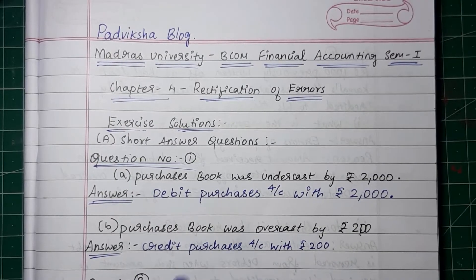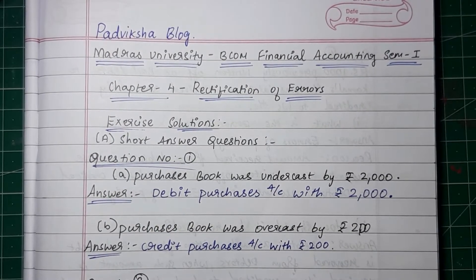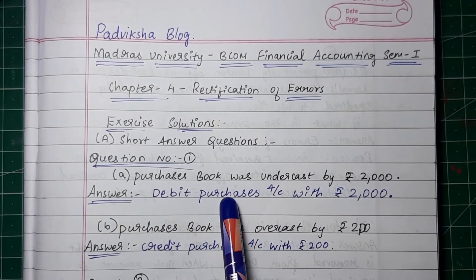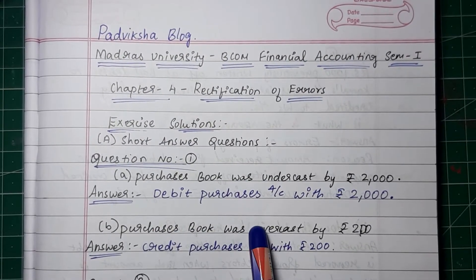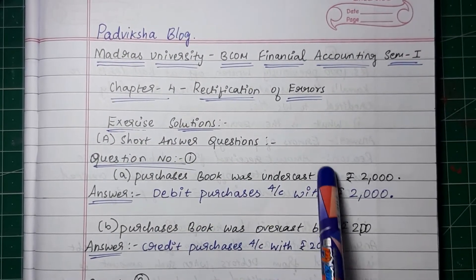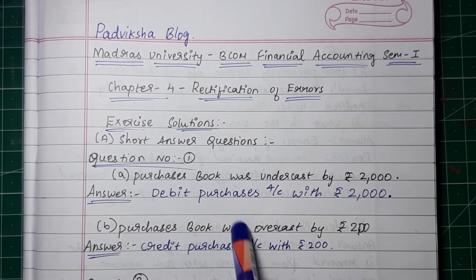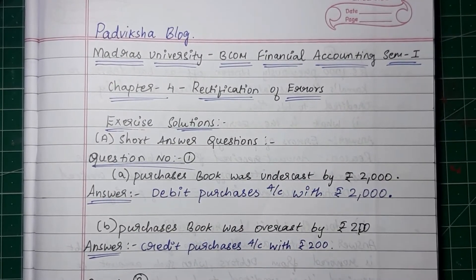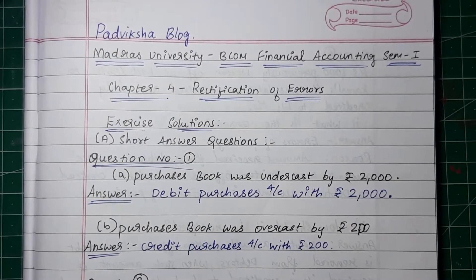Purchases book is a debit - it is an expense. So we will debit to correct it. Debit purchases account. We will get a small amount, so we will add to the purchase book.